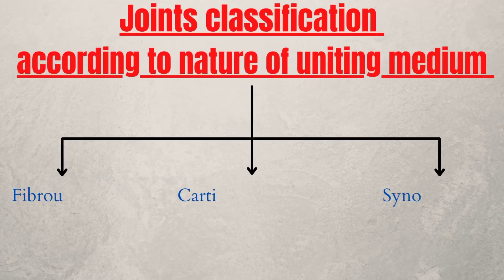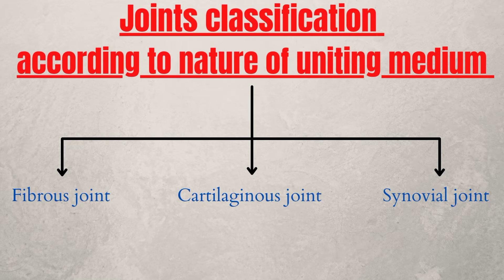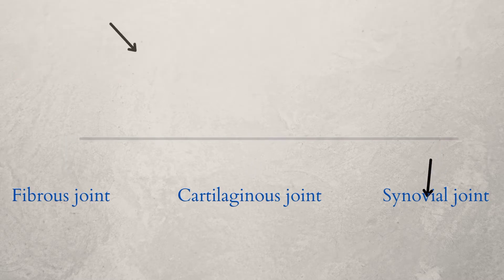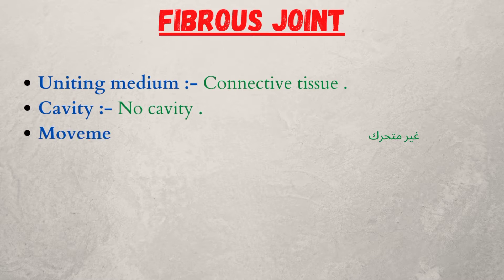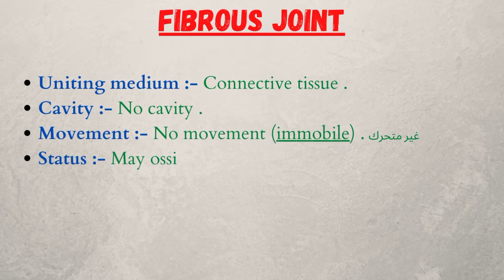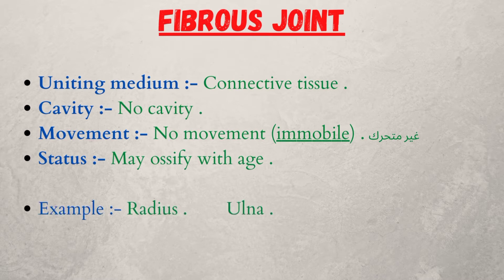Joints are classified according to the nature of the uniting medium into: one, fibrous joint; two, cartilaginous joint; three, synovial joint. The first is the fibrous joint — the uniting medium is connective tissue, there is no cavity, no movement or immobile. The status may ossify with age. Examples: radius-ulna, tibia-fibula.